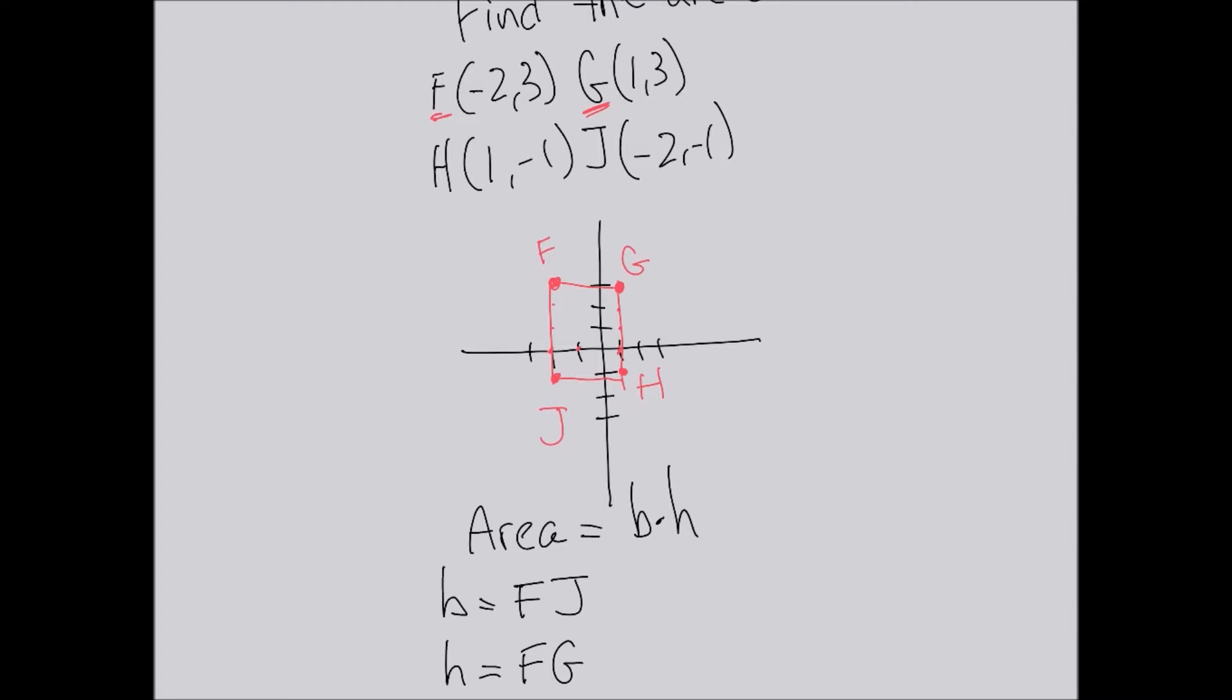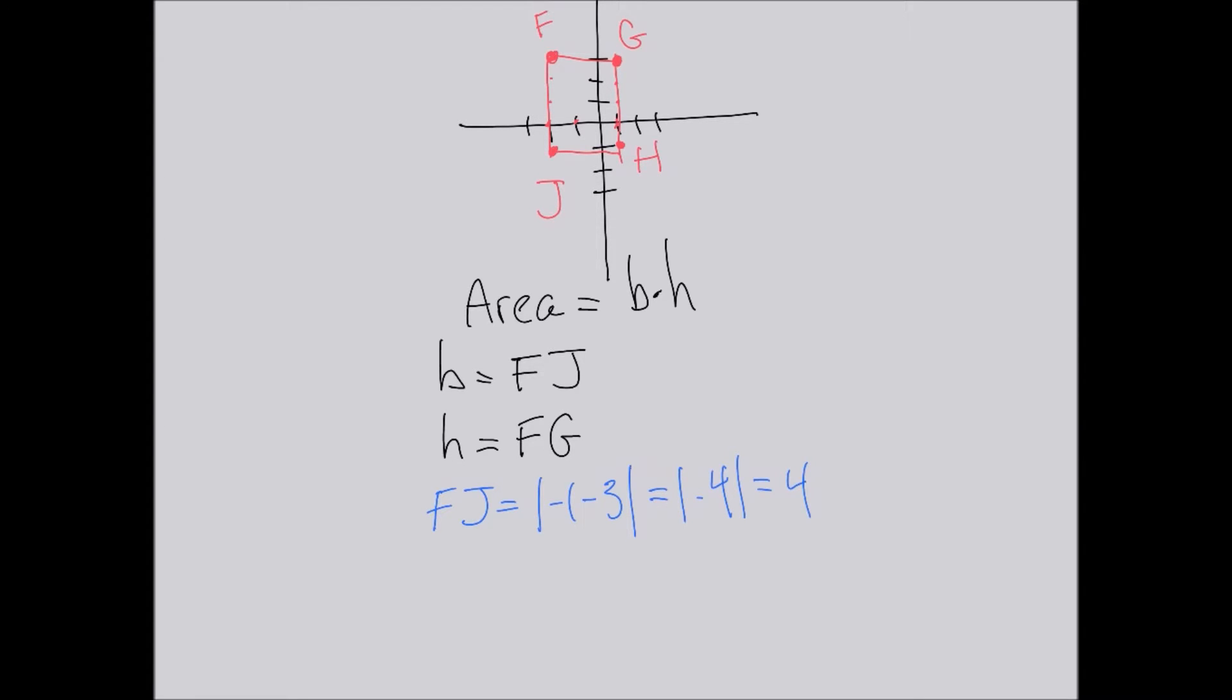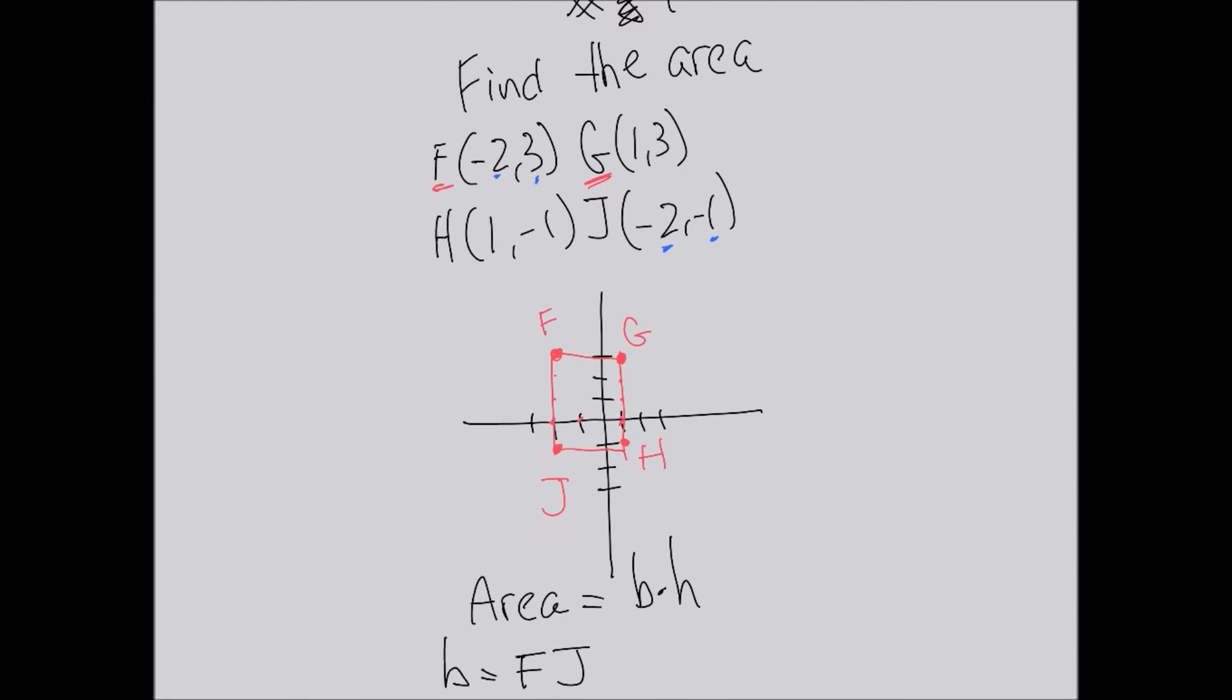we are going to calculate FJ as the absolute value of the difference—that means subtraction—the difference between the coordinates that aren't the same. And the same for FG, we're going to calculate the